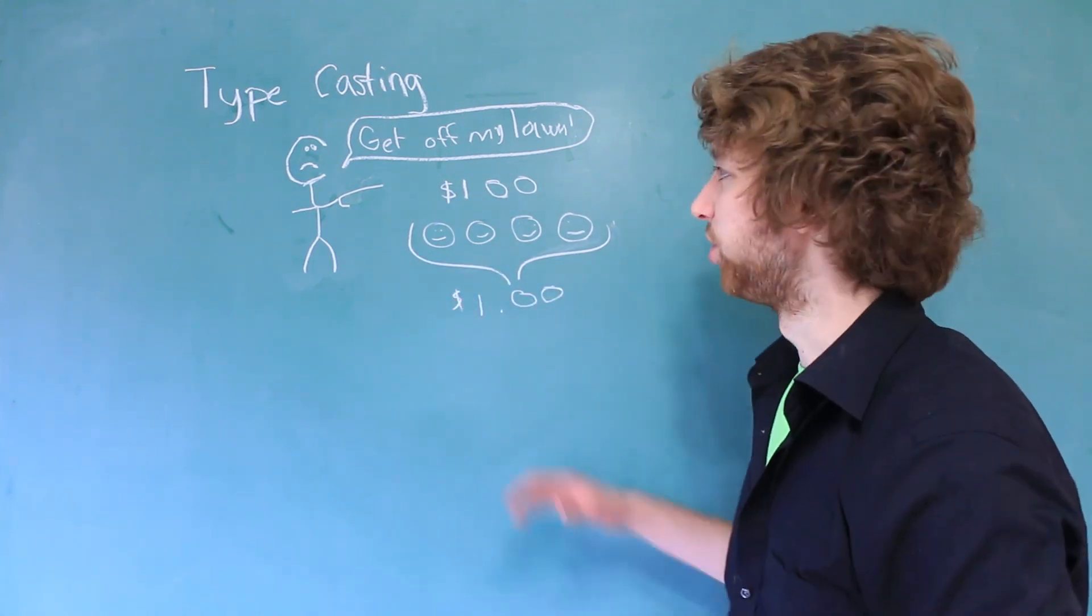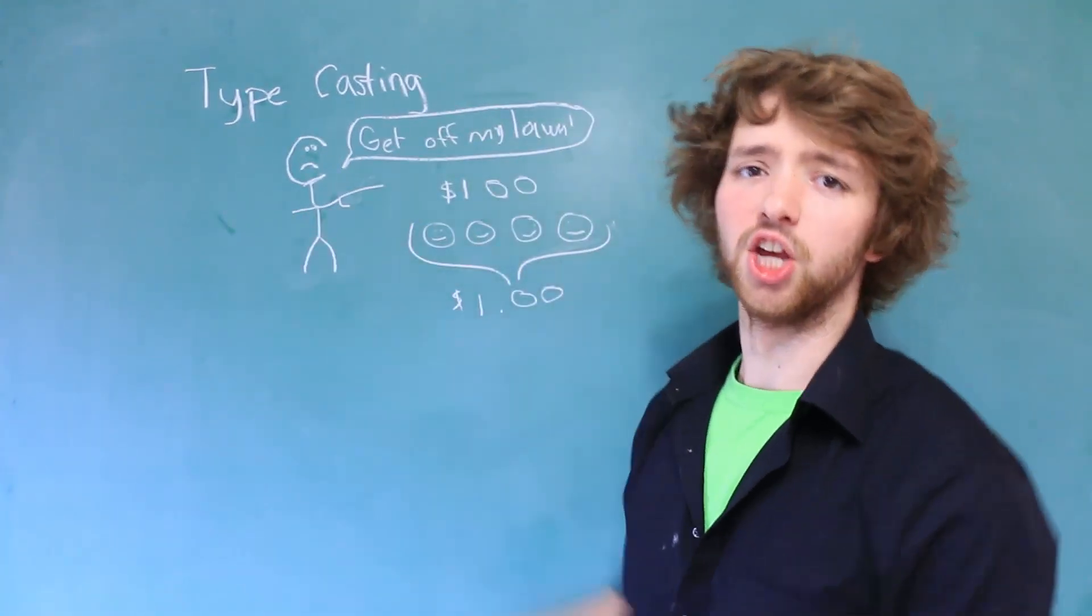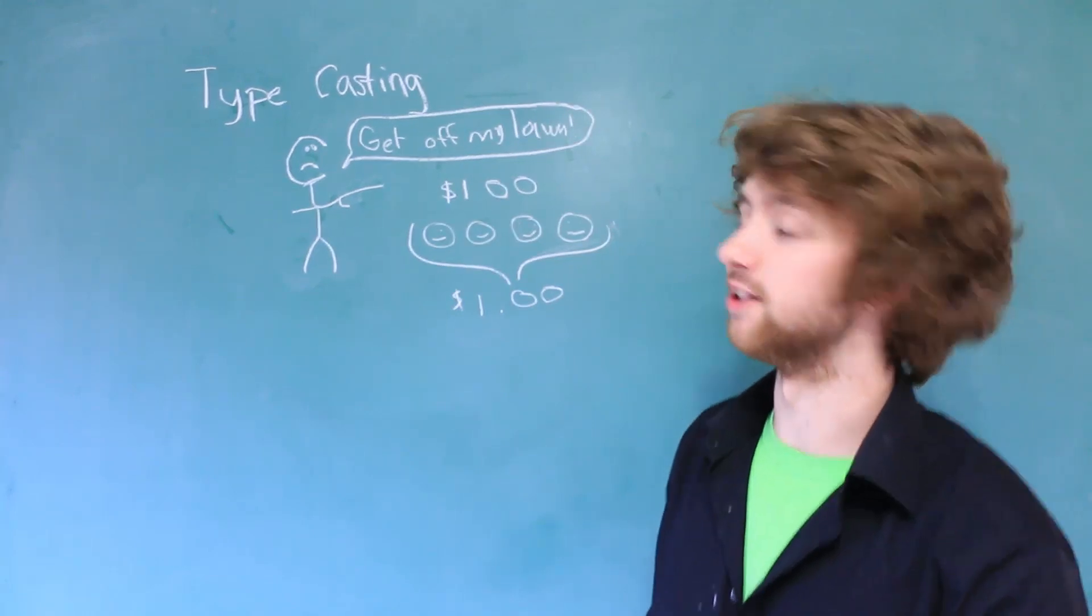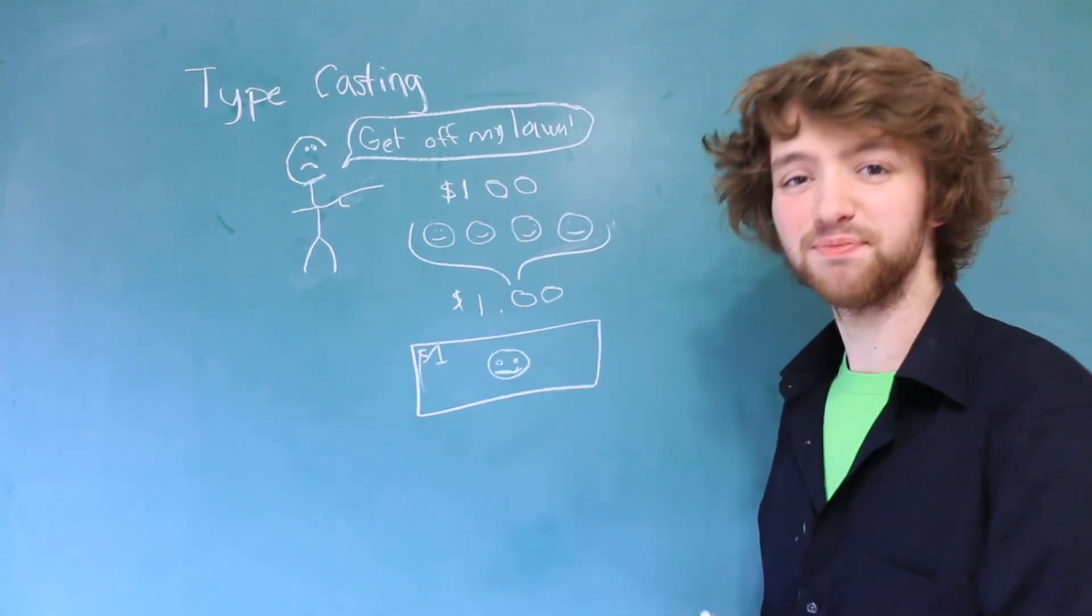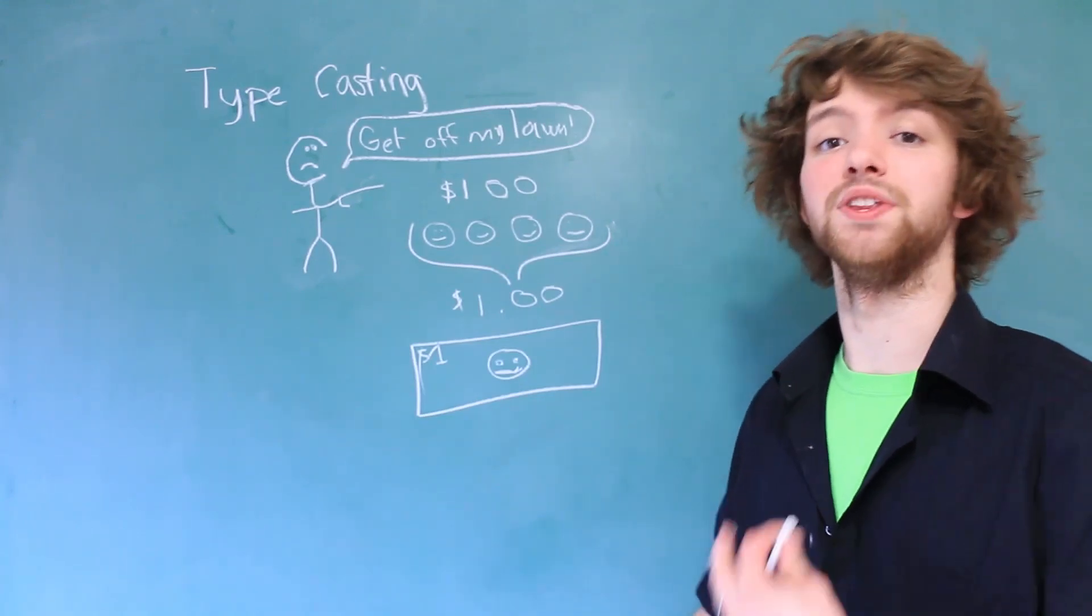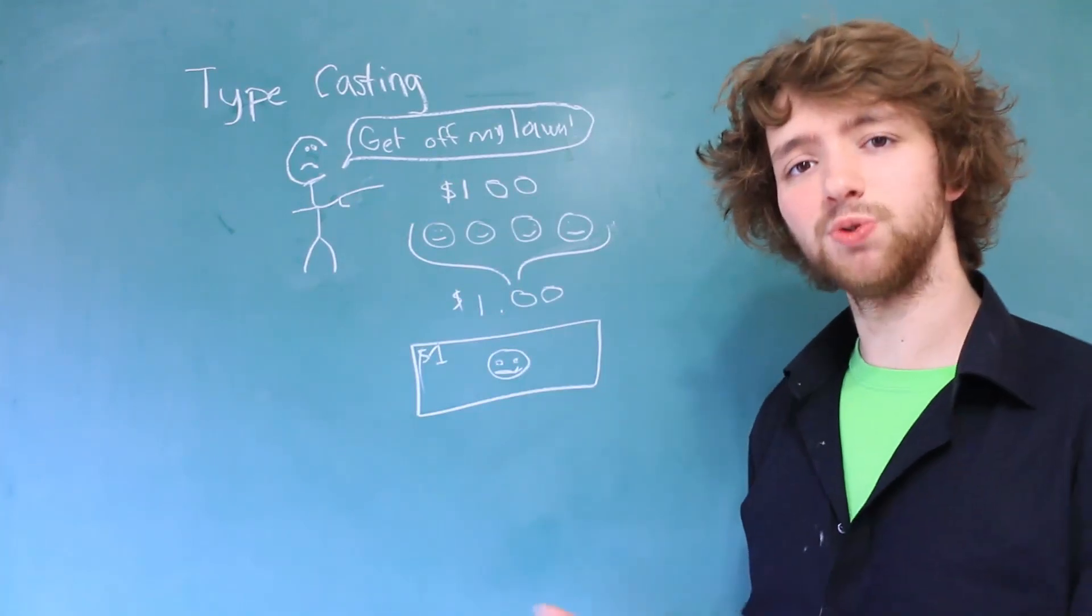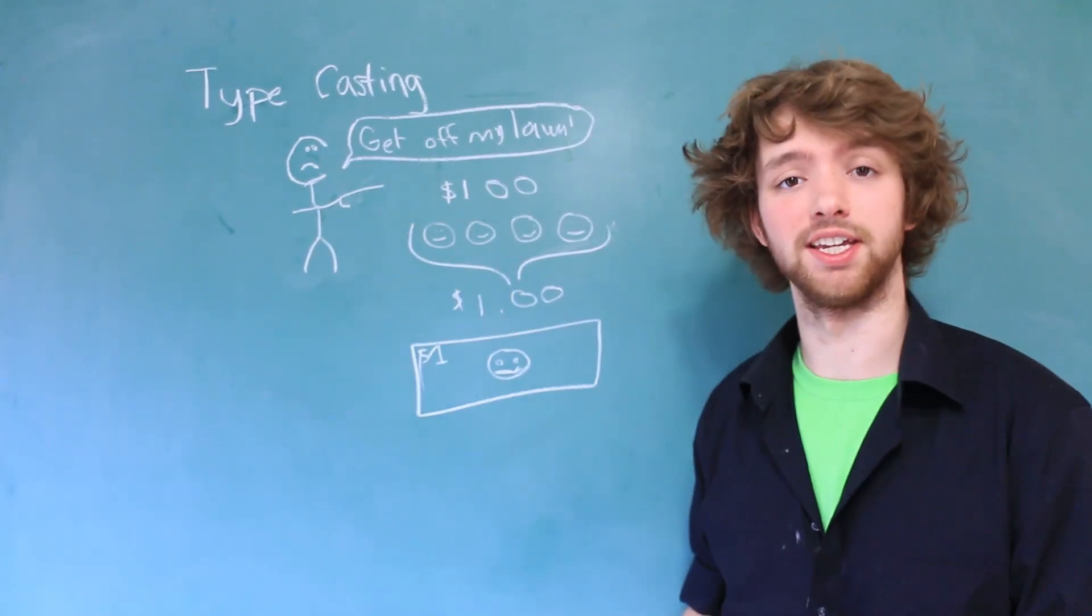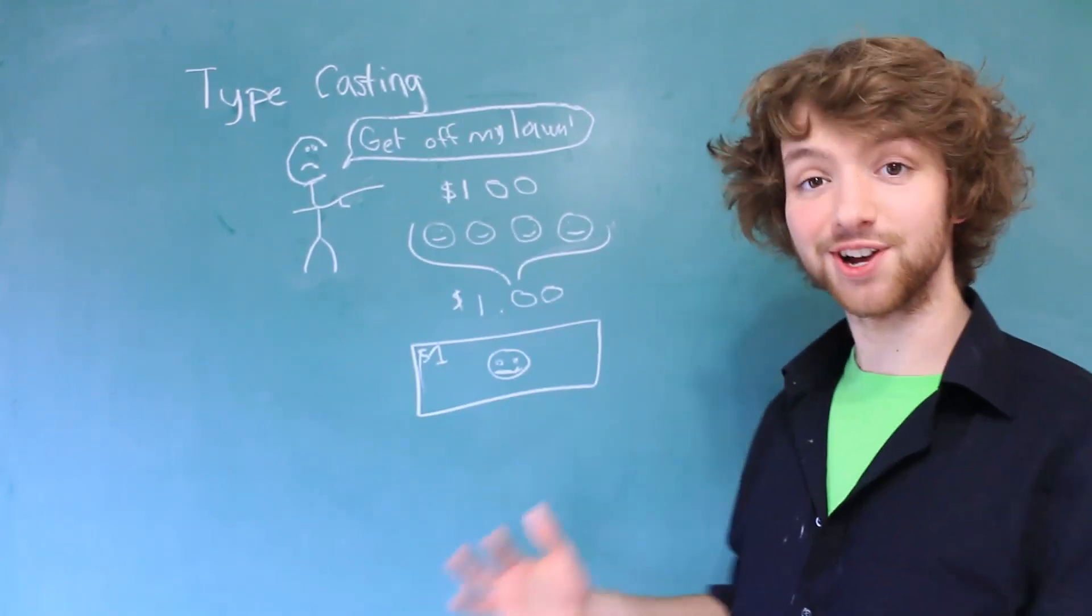But the problem is you didn't borrow four quarters from this old man. You borrowed a dollar bill. So he was expecting a dollar bill and this my friend is unacceptable. So he beats you over your head with this cane and says yo, bro, give me my money even though you gave him the correct amount of money. You're probably wondering what this has to do with anything, but it'll start to make sense in just a minute.